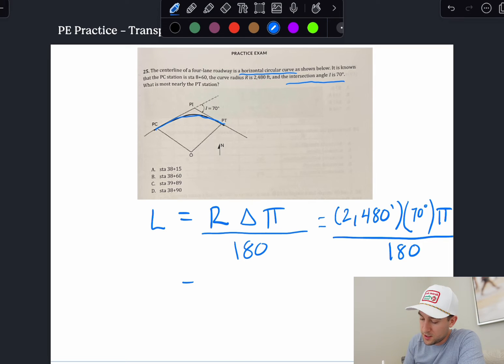It's a length of this curvature from this PC to that PT. So if we actually plug this into our equation and we plug this in the calculator, we get 3,029.89 feet. And then that gives us the length of curve. So now we have to add that linear feet right there from the PC to get the PT.